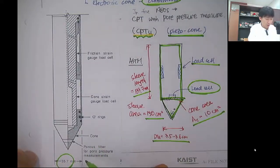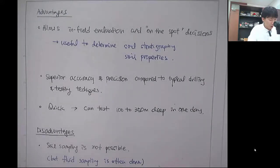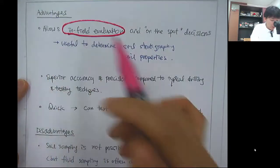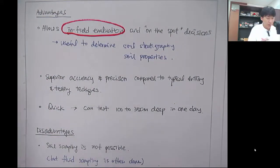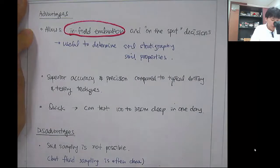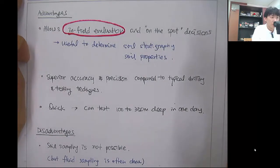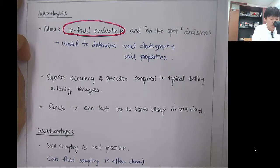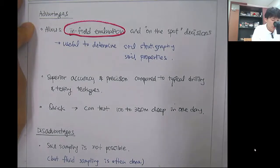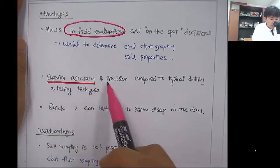Here are more specifications. The advantages of this cone CPT is it allows in-field evaluation. At the field, as you see the cone resistance, because it's very simple to calculate, you can directly make decisions on soil properties or soil stratigraphy. Whether you can say it's sandy layer that you have 10 meters thick, or clay layer 2 meters thick, those decisions can be made on the spot. It has very high accuracy and precision compared to other drilling and testing techniques.